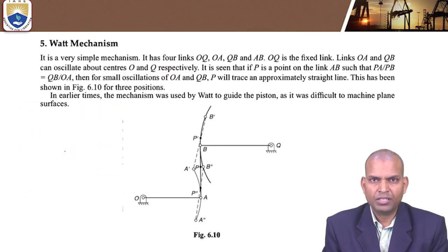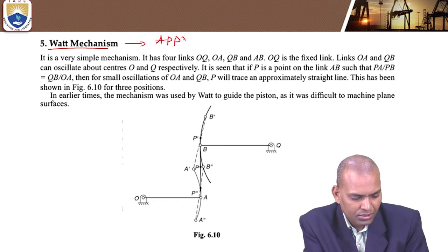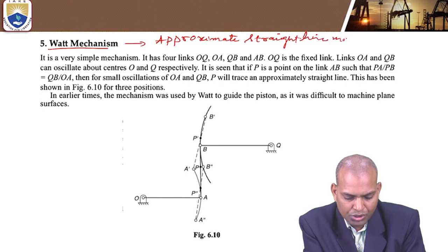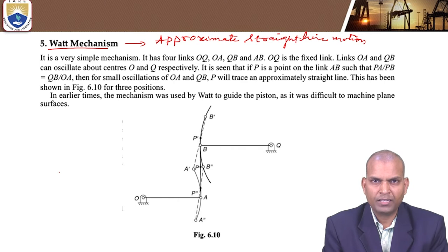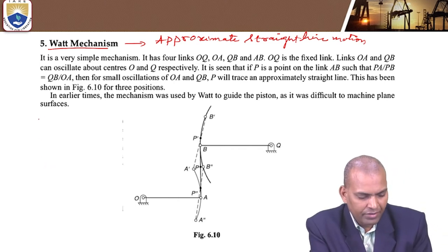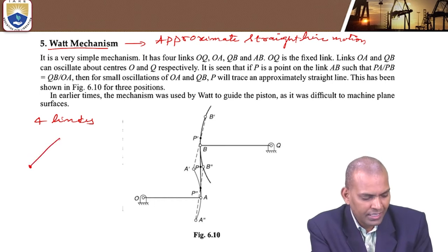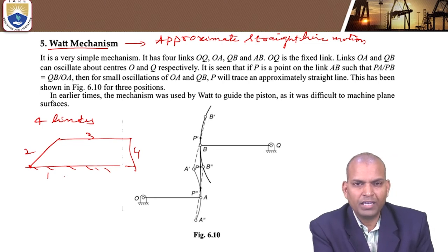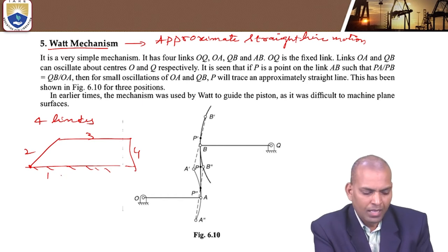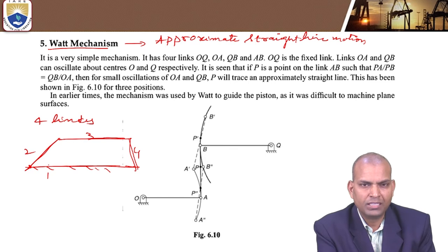The next mechanism is the Watt mechanism, which also comes under the category of approximate straight line motion mechanisms. The Watt mechanism is a very simple mechanism with 4 links, which is why it is also known as a 4-bar mechanism. It is studied here to help understand the basic concepts of kinematics of machines.